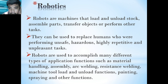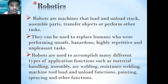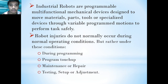Safeguards most commonly used include barrier guards, presence sensing devices, radio frequency sensors, light curtains, pullback devices, and quick guards. Robotics: robots are machines that load and unload stock, assemble parts, transfer objects, or perform other tasks. They can replace humans performing unsafe, hazardous, highly repetitive, or unpleasant tasks. Robots are used for applications such as material handling, assembly, welding, painting, spraying, and other functions. They are programmable mechanical devices designed to move materials, parts, tools, or special devices through variable programmed motion to perform tasks safely.